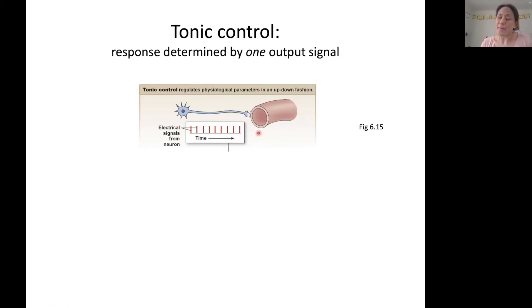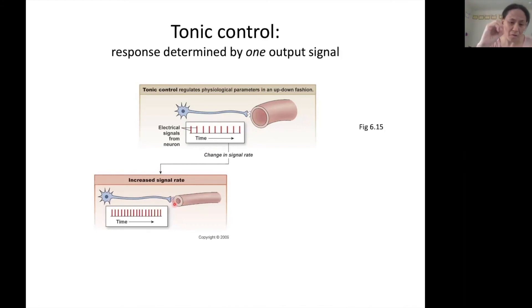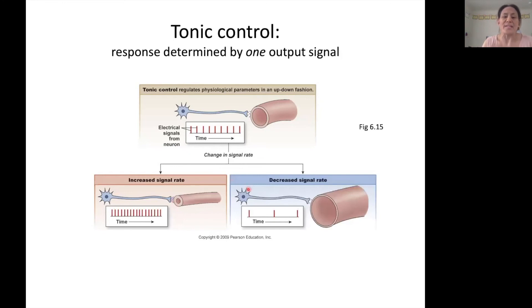Now what happens when we change this rate? So if we increase the rate at which this neuron is firing its action potentials, firing its electrical signals, that is going to tell that blood vessel to constrict. So it gets smaller. If we then decrease the rate at which we fire these electrical signals, that's going to tell the blood vessel to constrict less basically. So that's going to cause the blood vessel to then open up. So again, we are adjusting that output signal up or down to control the response at our target.